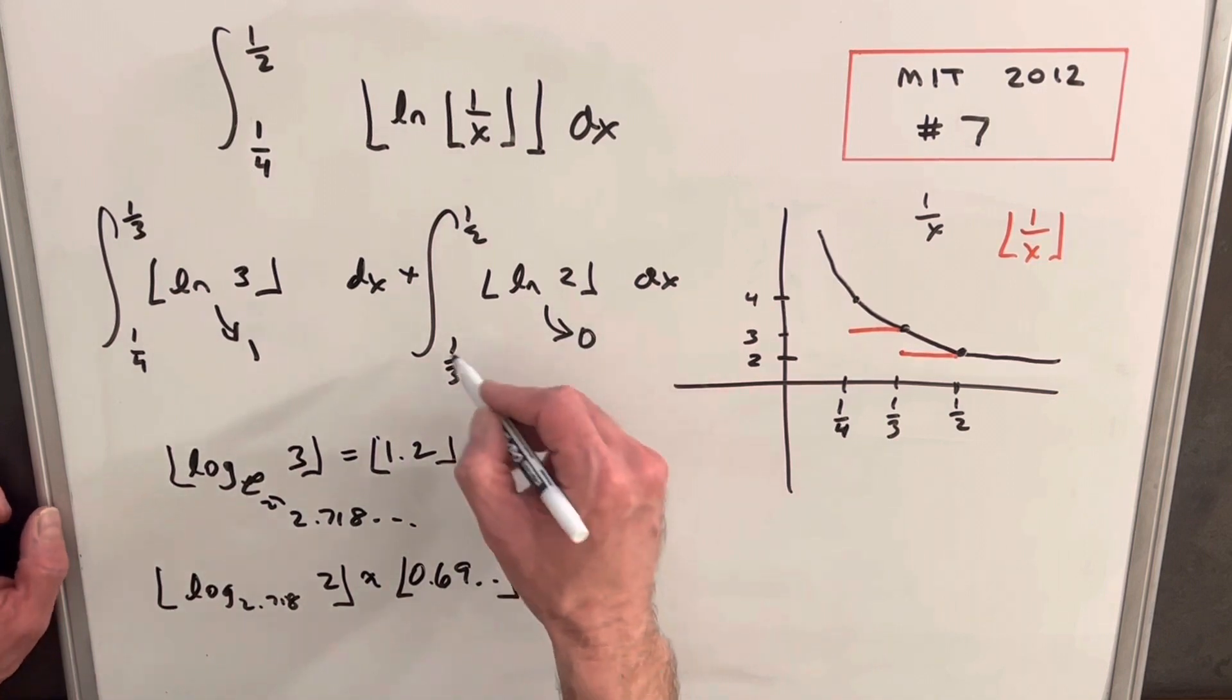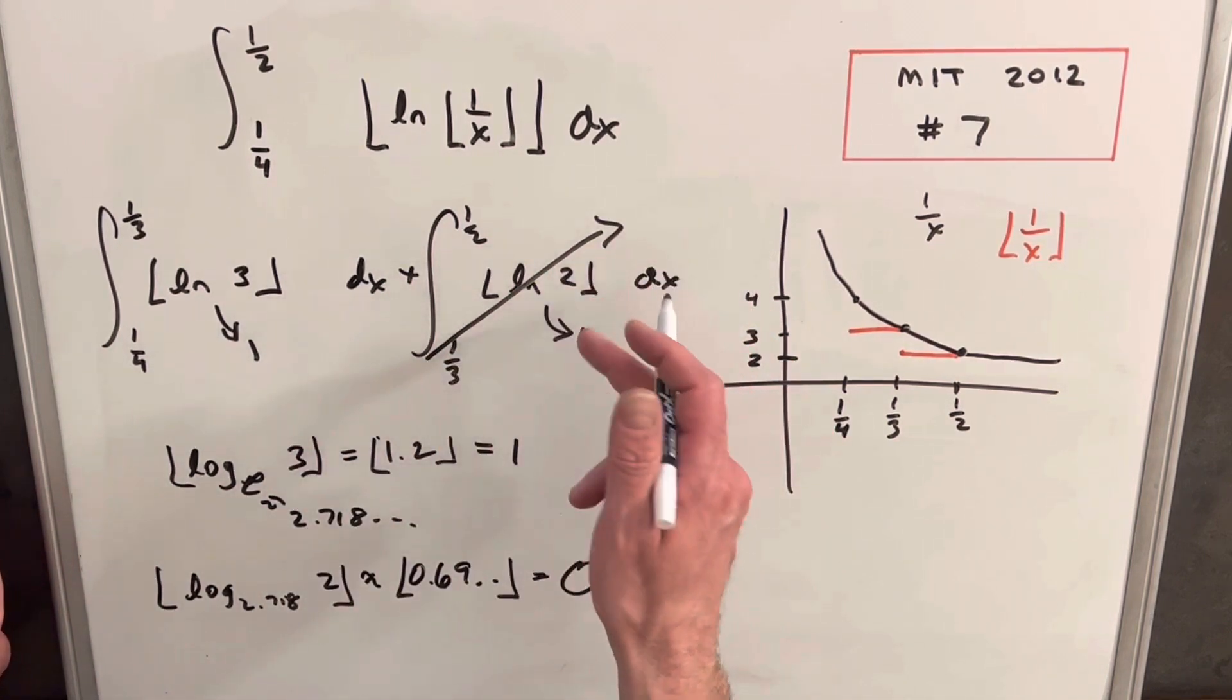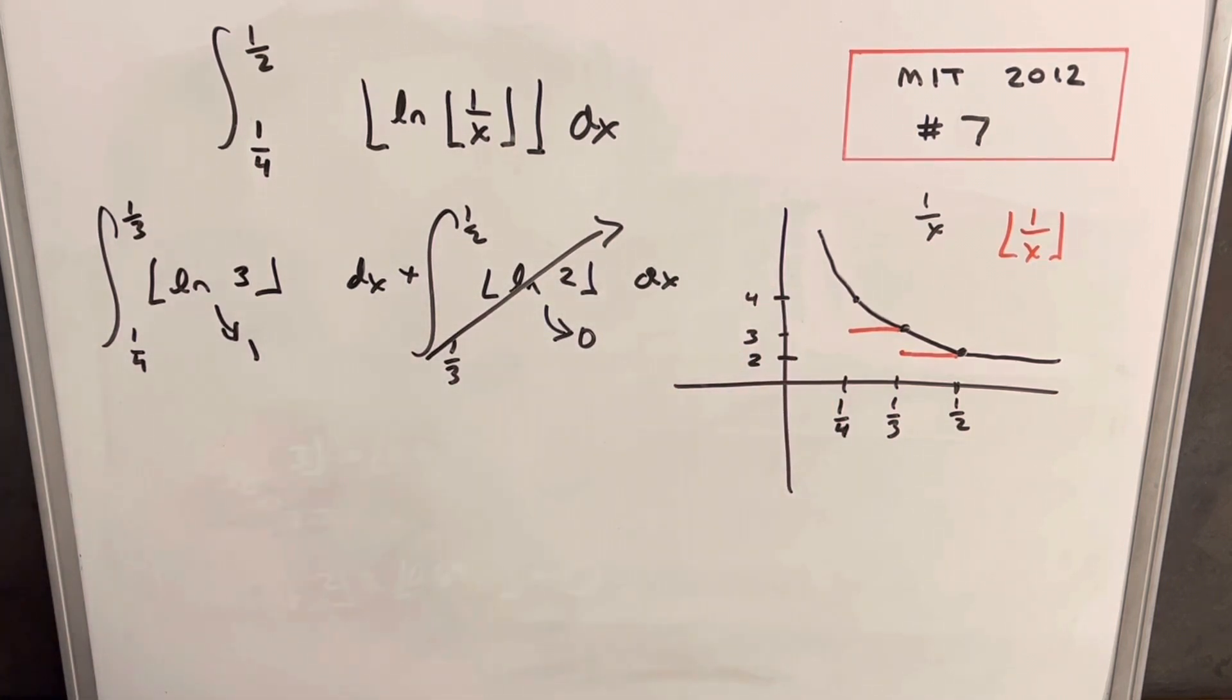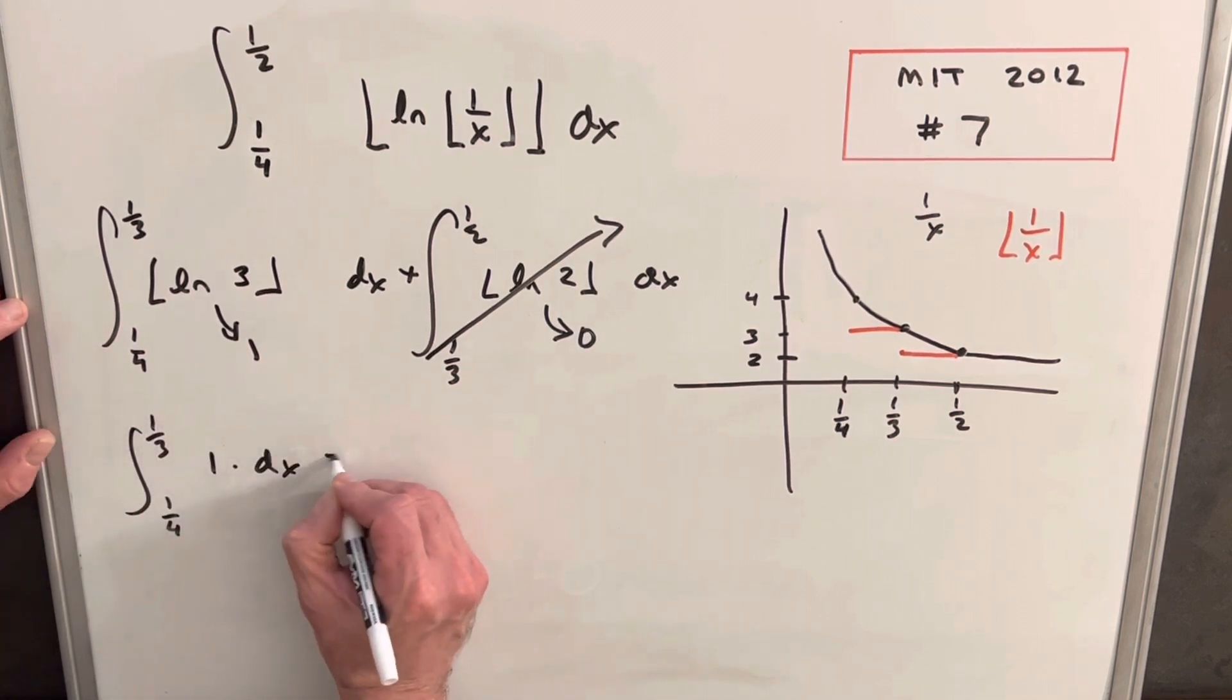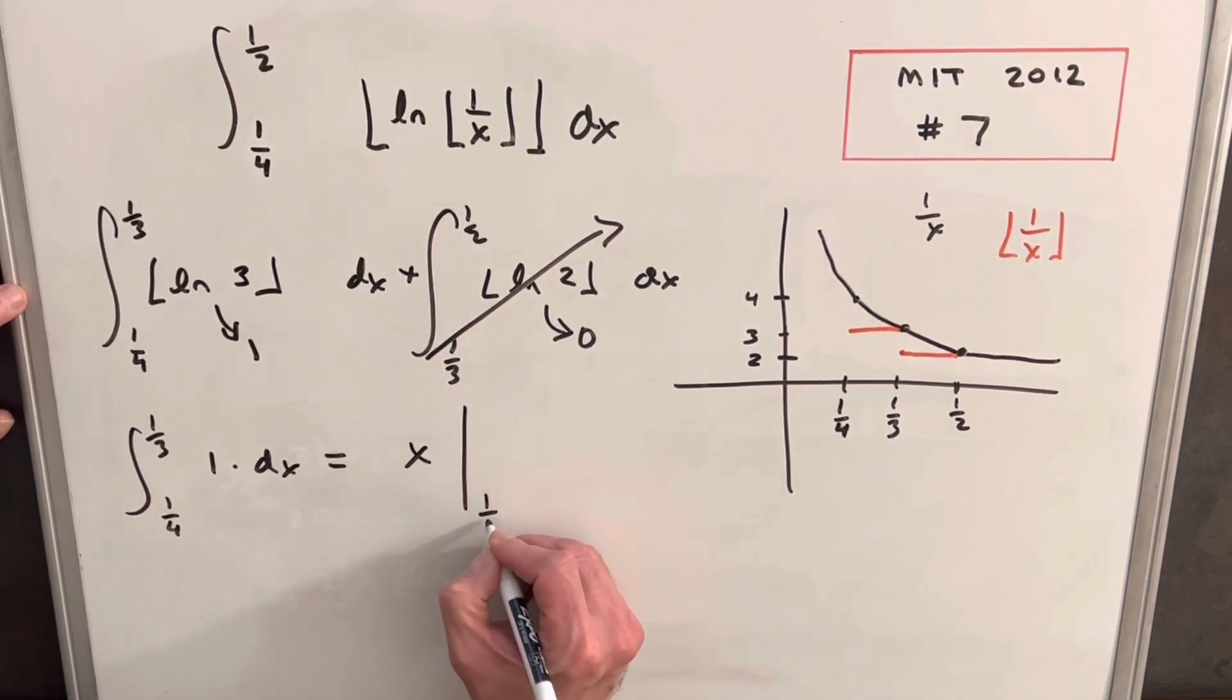So if this is zero in this integral, this part of the integral is just going to go away. Then we can just ignore this part because this whole integral is going to be zero. We can just evaluate this first part. So here again, this is just one. So we're just integrating from one-fourth to one-third of one dx. Simplest integral in the world. That's just going to be x evaluated on these bounds.